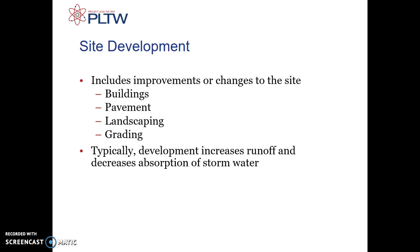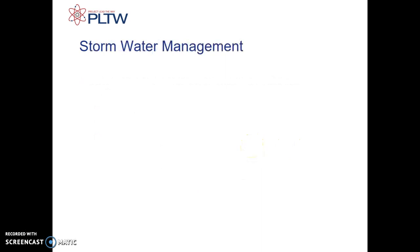Typically, development increases runoff and decreases the absorption of water. The exception would be if you take a parking lot, pull the pavement up, and replant it with grass — then it would go in the opposite direction. But typically, when you put pavement down on grasslands or farmland, you're going to get more runoff than before.